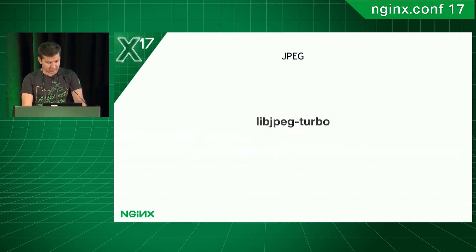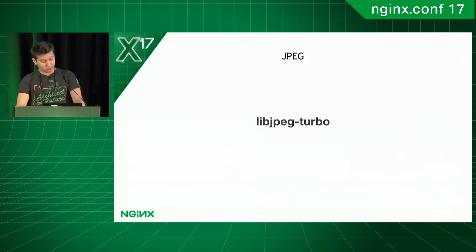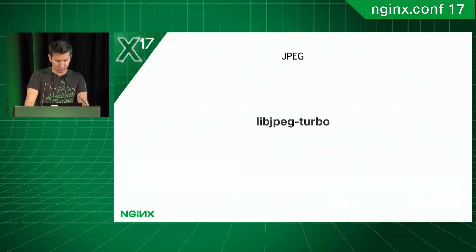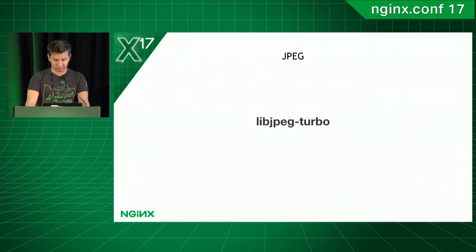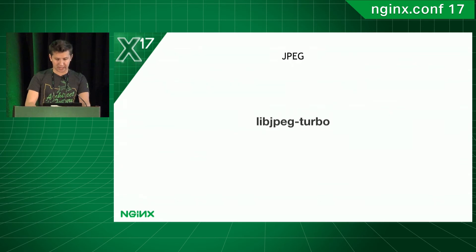The first alternative is LibJPEG-Turbo. LibJPEG-Turbo is a drop-in replacement for libjpeg. The purpose of the library is to provide faster encoding and decoding of images, achieved by using modern processor instructions. It is stated that LibJPEG-Turbo is up to six times faster than traditional libjpeg on modern hardware. It's worth noting that LibJPEG-Turbo is used in both Firefox and Google Chrome.